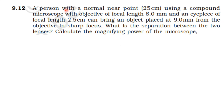A person with a normal near point of 25 cm is using a compound microscope. The final image at 25 cm from the eye lens will be formed. Two lenses: objective lens with focal length 8 mm, and eye lens with focal length 2.5 cm. The object is placed at 9 mm from the objective.